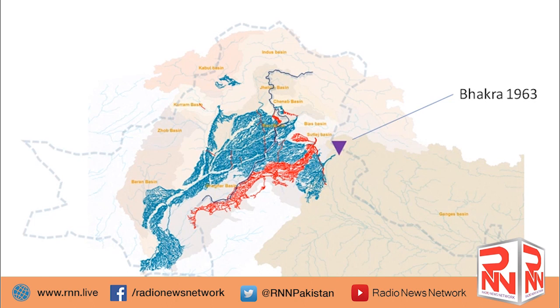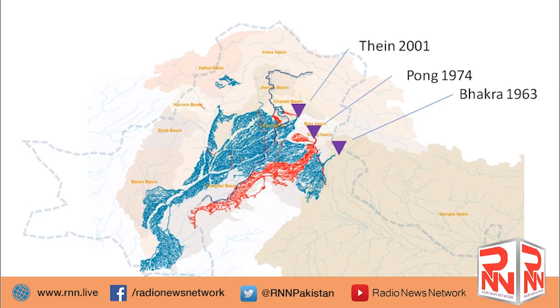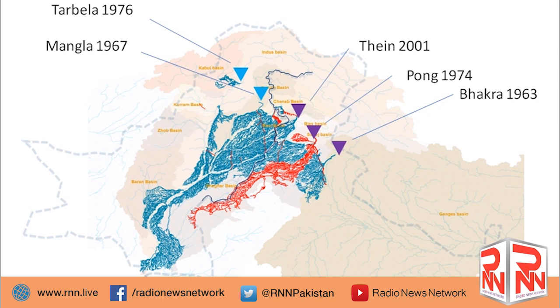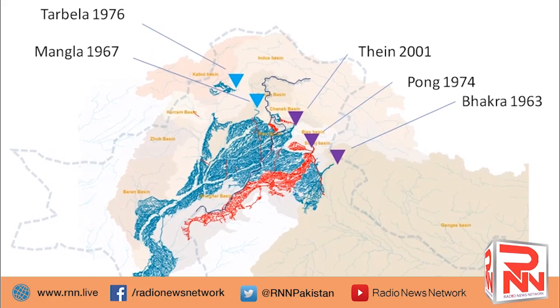When kings make mistakes, nations suffer, and we are suffering. These are the post-treaty dams: Bhakra 1963, Pong 1974, Thein 2001 — three in India. And on Pakistan's side: Mangla 1967, Tarbela 1976. Yet so much poetry, prose, and praise has been written for these two Pakistani dams. They say these are the dams which saved Pakistan — that without them, Pakistan would have been worse than Somalia or a desert. How far are those statements from the truth?